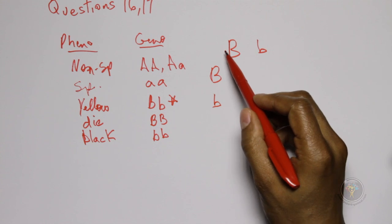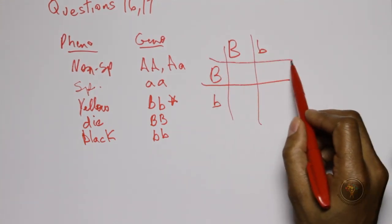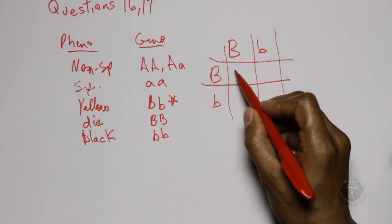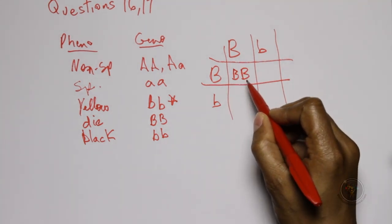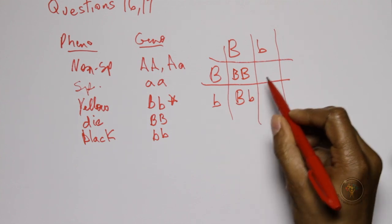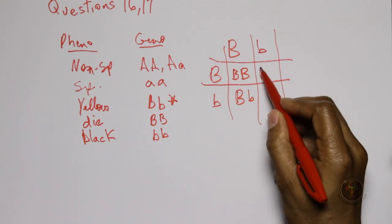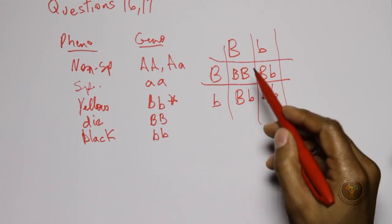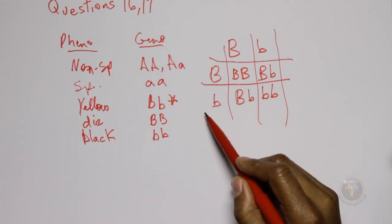So this is just a typical monohybrid cross in which we create a Punnett square for this and we look at the results. We have BB, Bb, Bb, and small bb. So these are the ratios that we are left with.